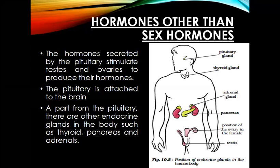Now in this video we will be continuing with the chapter, and the first topic is hormones other than sex hormones. There are many endocrine glands present in the human body such as the pituitary gland, thyroid gland, pancreas, and adrenal gland. Their position can be seen in figure 10.5. The pituitary is attached to the brain, and the hormones secreted by the pituitary gland stimulate the testes and ovaries — the male and female reproductive organs — so that they can produce their hormones, estrogen and testosterone.